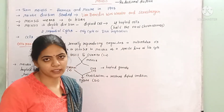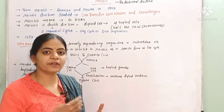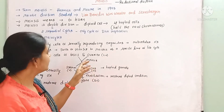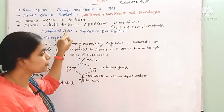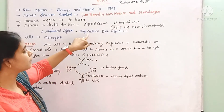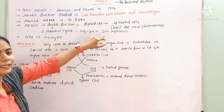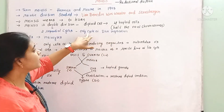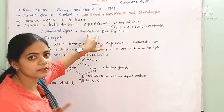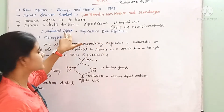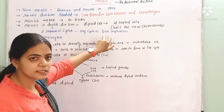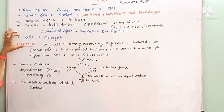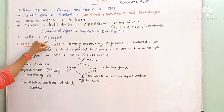As we studied in interphase, DNA replication happens during interphase. But in meiosis, even though there are two sequential cycles, DNA replication occurs only in the first cycle — not before the second cycle. So there is only one cycle of DNA replication in meiosis. The cells undergoing meiosis are called meiocytes.